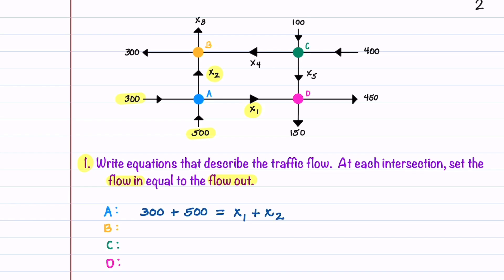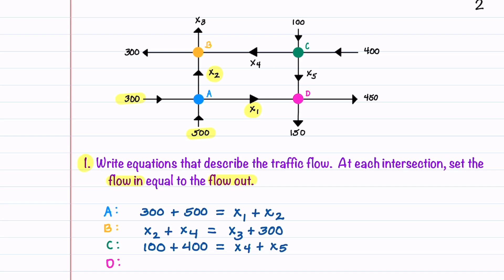We do the same for the other nodes. At node B, we have X2 plus X4 going into the intersection, and X3 plus 300 leaving. At intersection C, we have 100 and 400 flowing in, and X4 plus X5 exiting. At intersection D, we have X1 and X5 entering, and 150 plus 450 exiting.